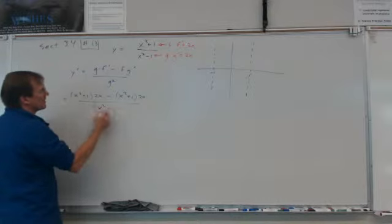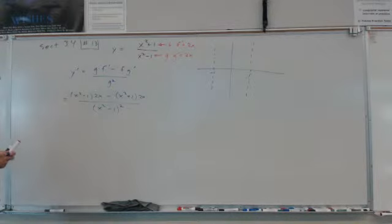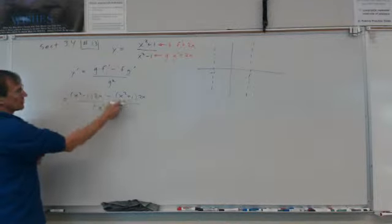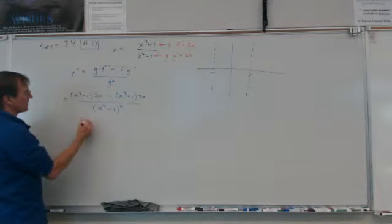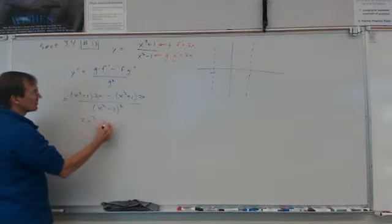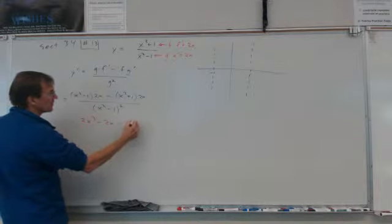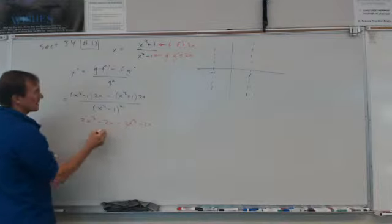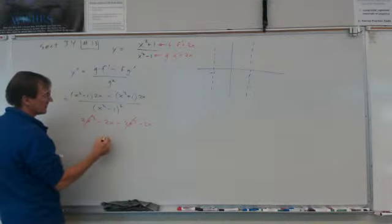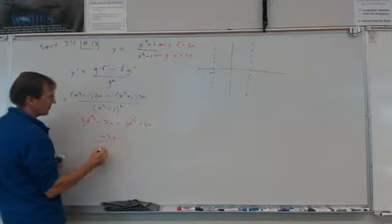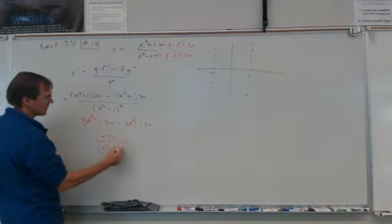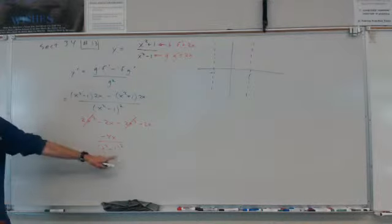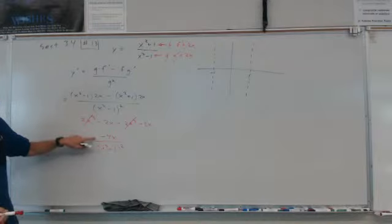Simplifying the numerator: g is x squared minus 1, so we get 2x cubed minus 2x, minus 2x cubed minus 2x. The x cubed terms cancel out, giving us negative 4x over x squared minus 1 quantity squared in the denominator.